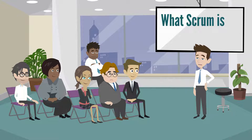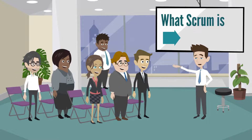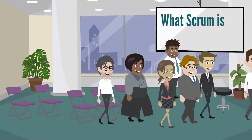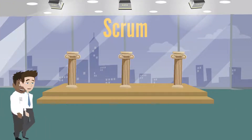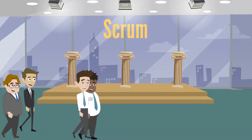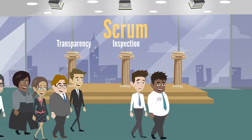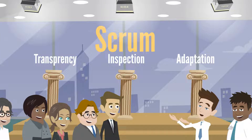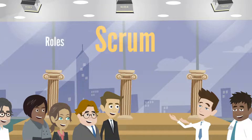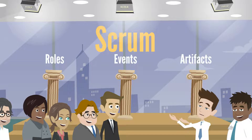Fortunately, looking at what Scrum actually is tends to be a whole lot easier than classifying it, so let's start there. First, it's important to note that Scrum rests on three pillars: transparency, inspection, and adaptation. These are important because they really help provide much greater context to the other parts of Scrum. You'll see them present as we look at Scrum's primary components: roles, events, and artifacts.